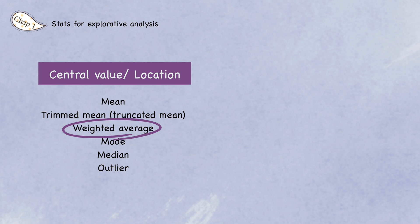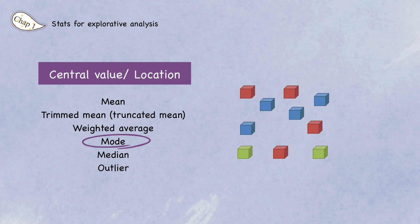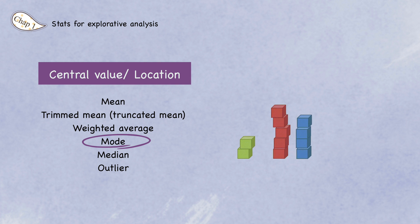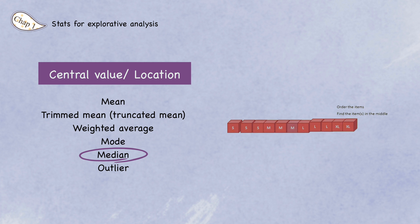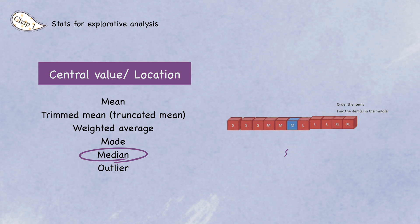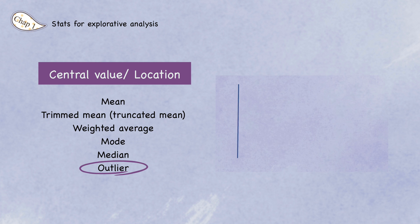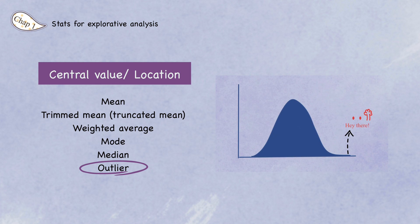For categorical variables, we can't calculate the average, so instead we use the mode — the value or values that appear most often in the data. We also often look at the median, which is the value such that one half the data lies above and one half lies below it. Lastly, we have the outlier — a data value that is very different from most of the data.